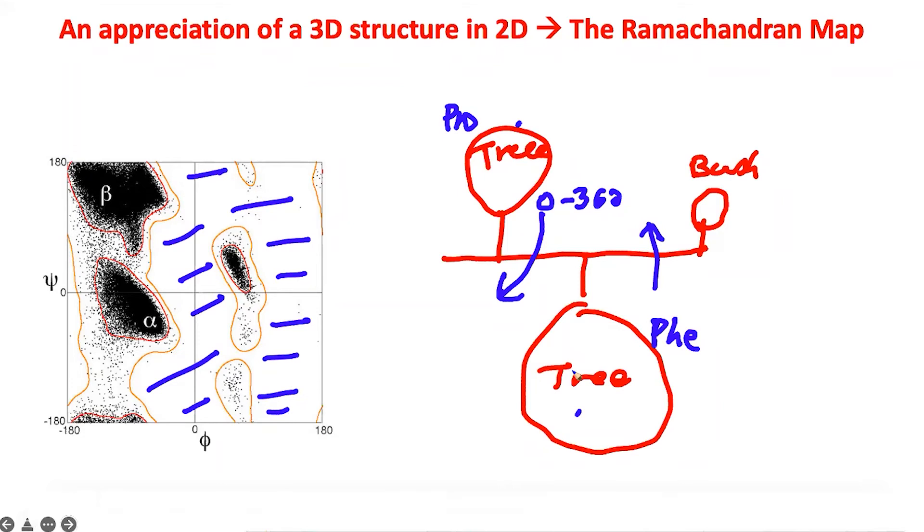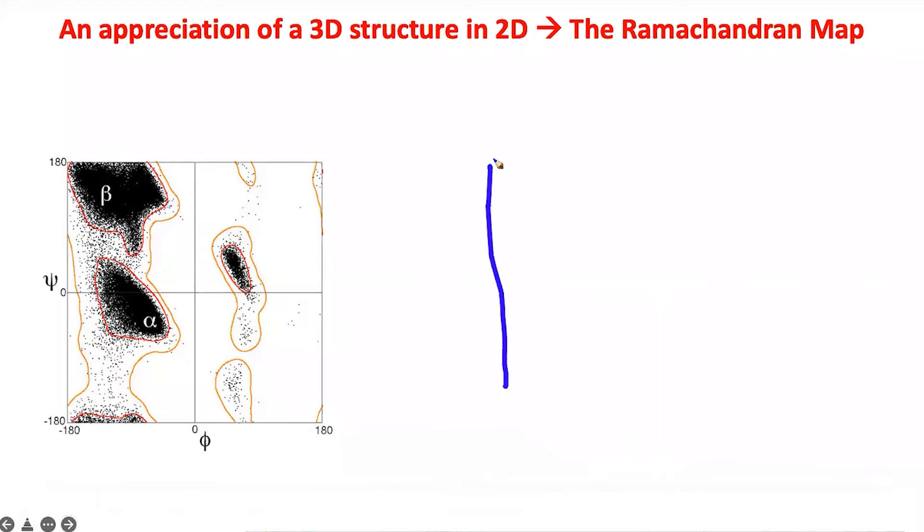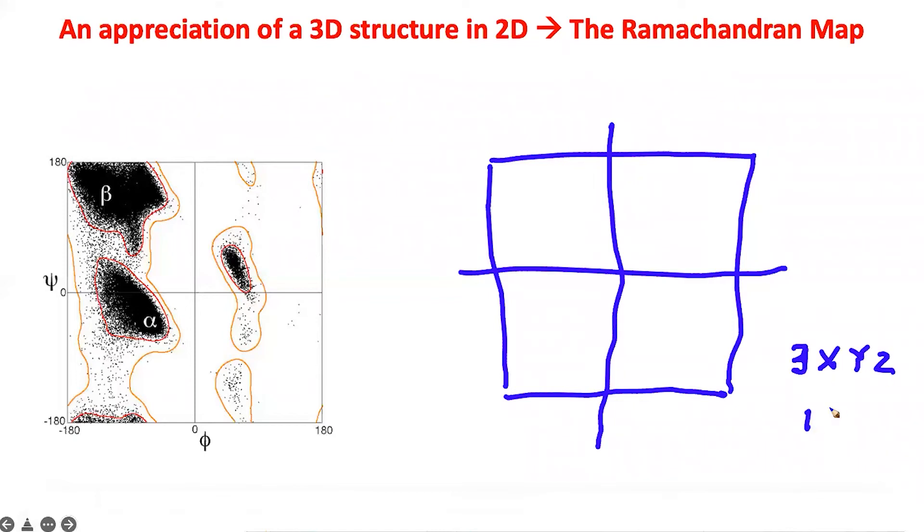Does each dot represent a molecule with a certain psi and phi value? Let me explain. If we take one protein from the PDB with ID 3XYZ, and it has 100 amino acids in a linear sequence folded into a state captured by X-ray crystallography, we have a file with coordinates in space. It will have 99 pairs of phi and psi. Is that clear?